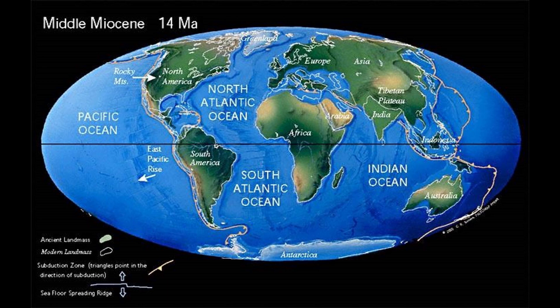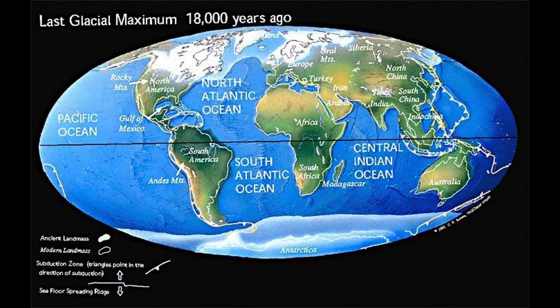The world has taken on a modern look, but notice that Florida and parts of Asia were flooded by the sea. When the Earth is in its ice house climate mode, there is ice at the poles. The polar ice sheet expands and contracts because of variations in the Earth's orbit — Milankovitch cycles. The last expansion of the polar ice sheets took place about 18,000 years ago.